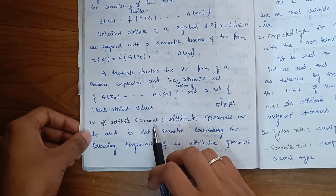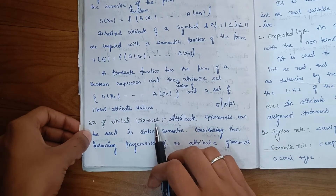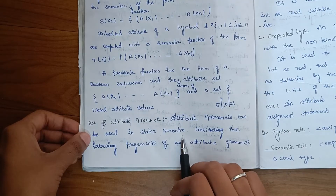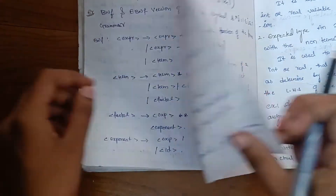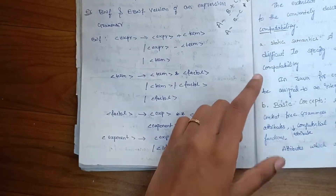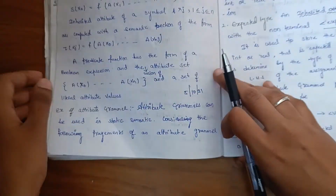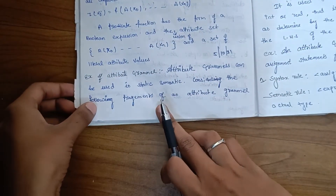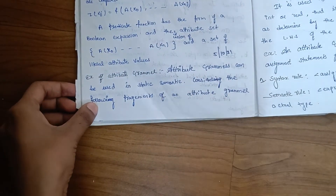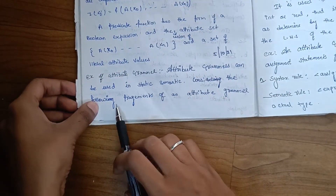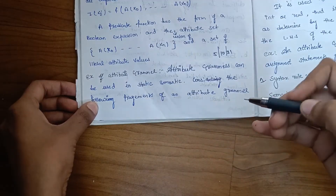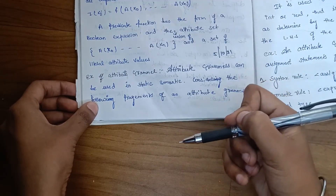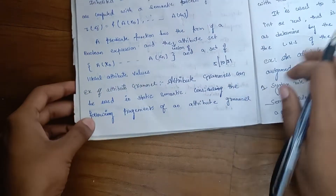Next, example attribute grammar. Attribute grammar can be used in static semantic analysis. Considering the following fragments of an attribute grammar — that means little pieces, like fragments of an attribute grammar.